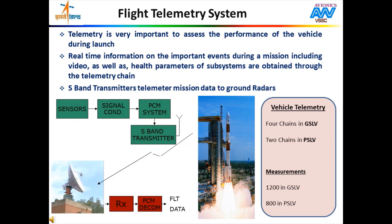Telemetry system plays a vital role in assessing the performance of the vehicle during launch. Sensors are located at all critical points of a rocket. Just as a fingerprint sensor on a mobile detects a unique fingerprint, the vitals of the rocket — including temperature, pressure, fuel level, etc. — are measured by respective sensors, amplified, modulated and sent through S-band telemetry transmitters to radar locations at different ground stations on Earth. The S-band transmitter on board works in the S-band frequency range of 2.2 to 2.3 GHz. These signals are received by radar and converted to understandable information. A GSLV has 4 chains of telemetry transmitters while PSLV and GSLV Mark III has 2 each.